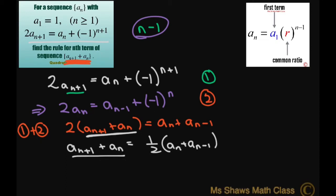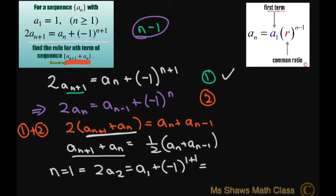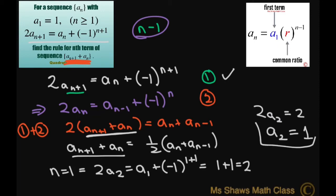Now let's look at equation 1 when n equals 1. We get 2 a sub 2 equals a sub 1 plus negative 1 to the power of 1 plus 1, which gives 1 plus 1 equals 2. So 2 a sub 2 equals 2, meaning a sub 2 equals 1. Adding a sub 1 plus a sub 2 gives 1 plus 1 equals 2. We'll call this result 4.